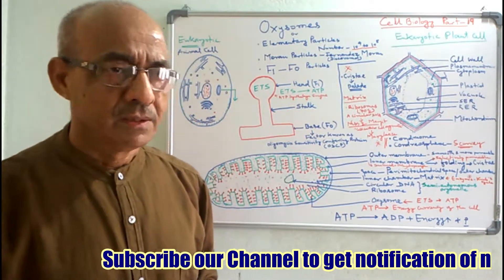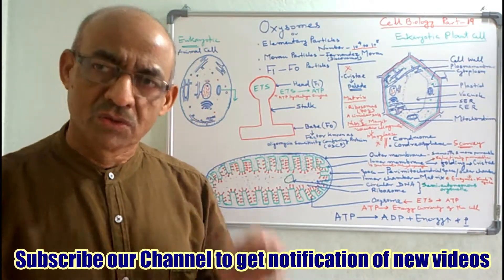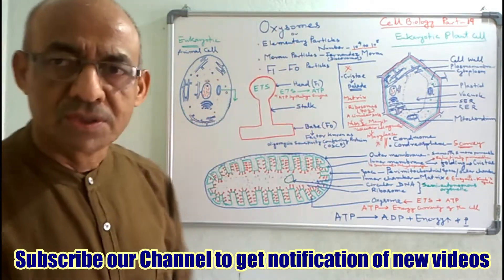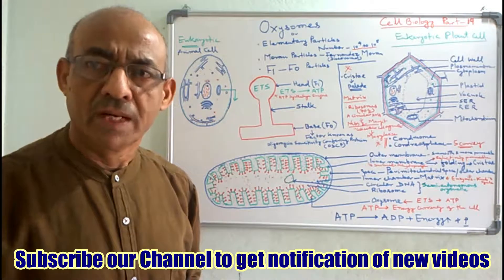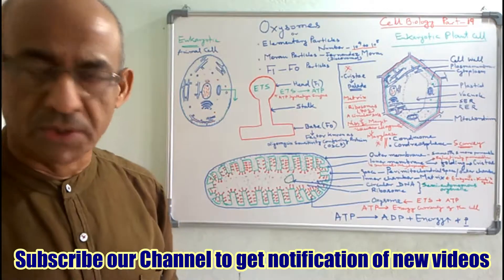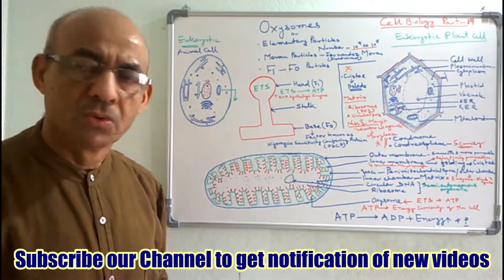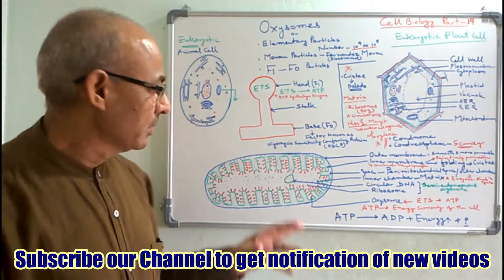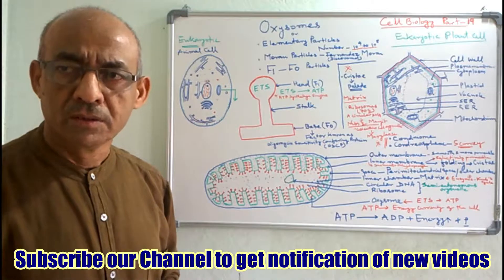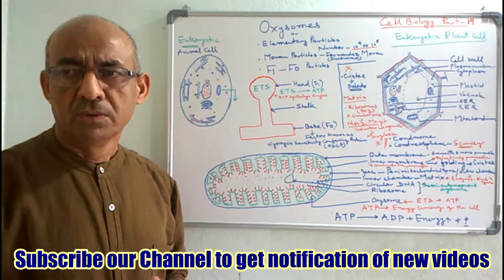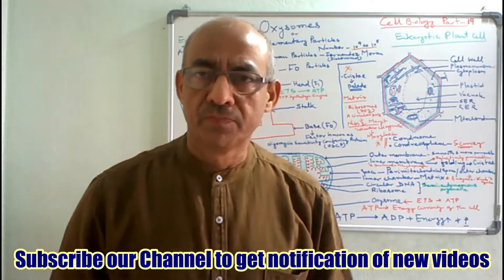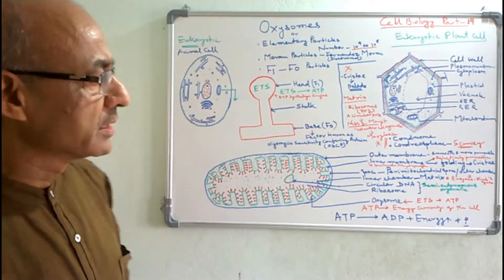Now here we will discuss exclusively the structure and function of oxysomes. I am revising certain information from the last session. As you know, on the inner membrane of the mitochondria there are a number of finger-like projections or foldings. They are called as Cristae. In singular, they are pronounced as Crista.